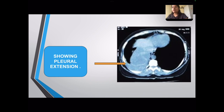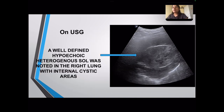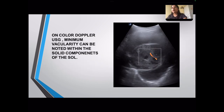In the next slide, we can see the progressive compression of the right main bronchus by the mass. An ultrasound was performed and a well-defined hypoechoic heterogeneous mass was noted in the right lung with internal cystic necrotic areas. On color Doppler, the solid components of the mass were showing vascularity.